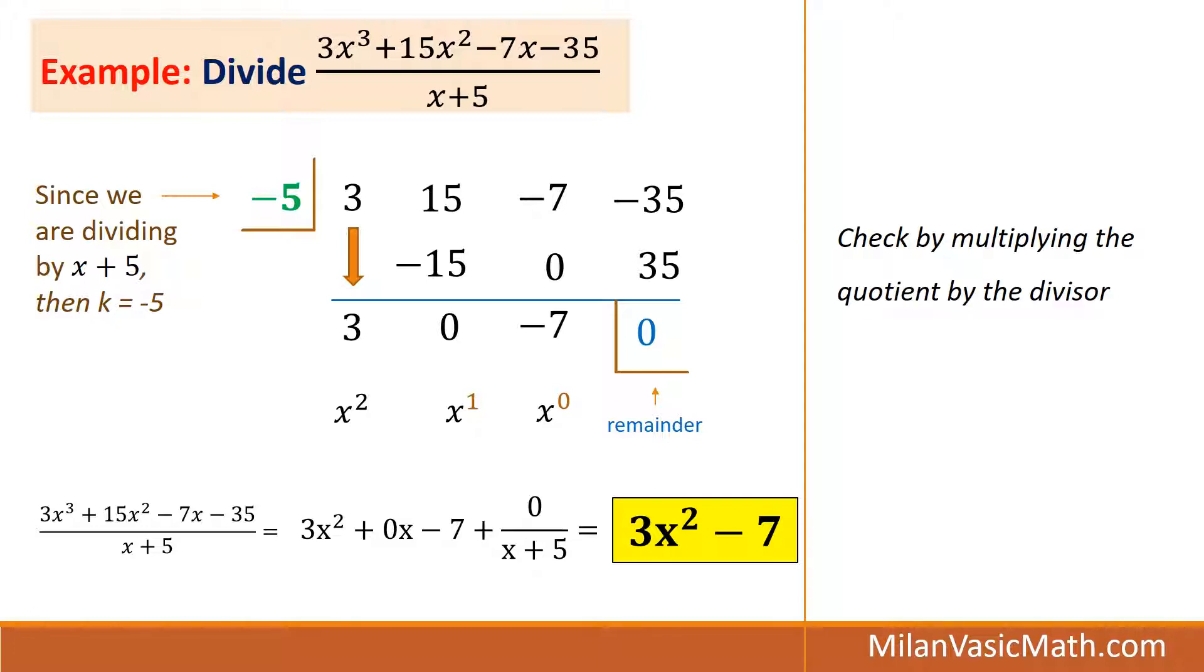A couple things we should do. First, we could check by multiplying the quotient by the divisor. So, just a reminder, if you have 40 divided by 8 equals 5, you could check that by multiplying 5 times 8 is 40. You know you're doing it right. So, likewise, multiply 3x squared minus 7 with x plus 5. Go ahead and distribute this. And I get the numerator. That was the dividend. So, that is correct.